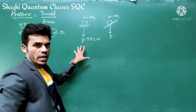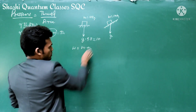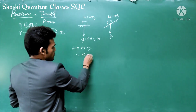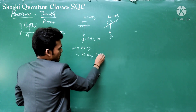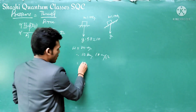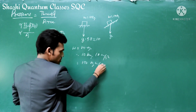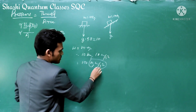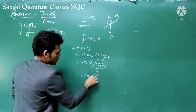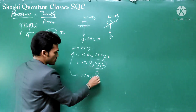For the horizontal surface, it is easy to calculate the weight. Weight equals mass into acceleration due to gravity. Here mass is 10 kg and g is 10 m/s², so weight equals 100 kg·m/s², which is 100 Newton. This is the force exerted by the object on the horizontal surface.